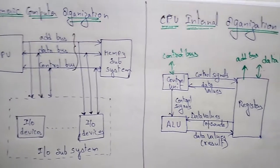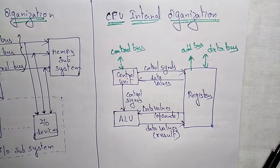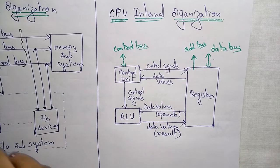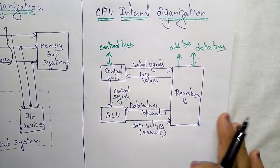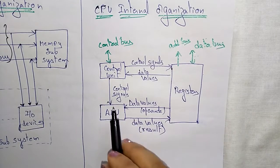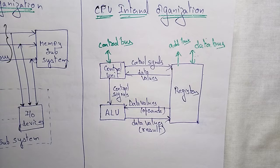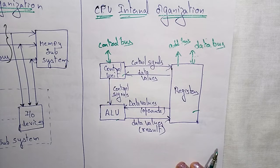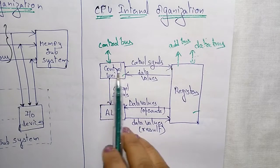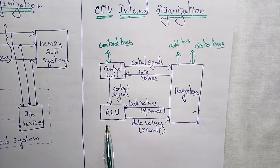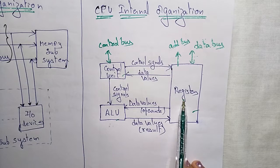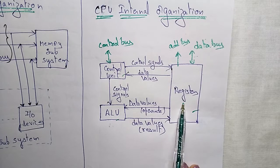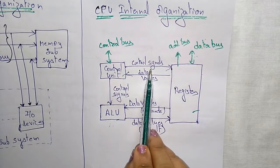That is the generic computer organization. Now let us look at the CPU internal organization. Inside the CPU there are three components: the control unit, the arithmetic logic unit (ALU), and registers. The control unit sends control signals to the registers as well as the ALU. The ALU performs arithmetic and logical operations, and the registers hold temporary data very quickly as a fast storage device.